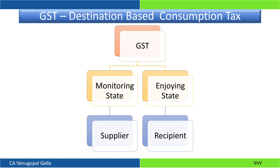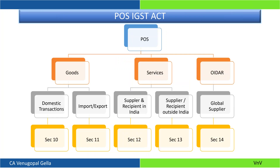What becomes very important is the state to which the revenue goes, and that is purely determined by the place of supply. So the place of supply is a prominent chapter in GST. Generally in GST, whenever someone refers to a section, you should consider it as CGST Act unless mentioned otherwise. But in today's discussion, whatever section numbers I mention are from the IGST Act.